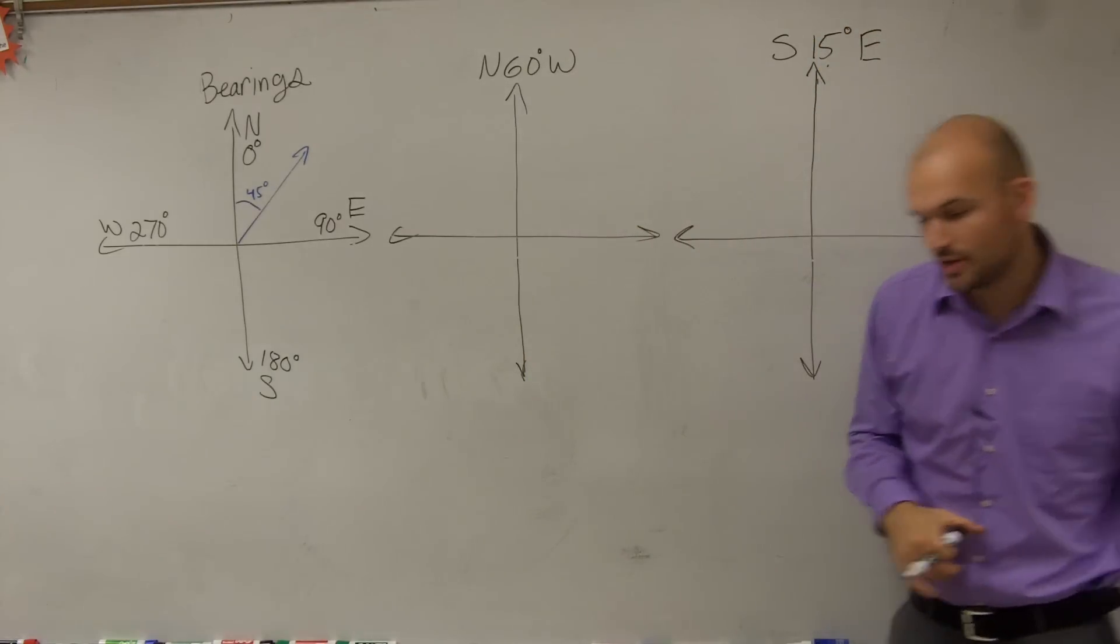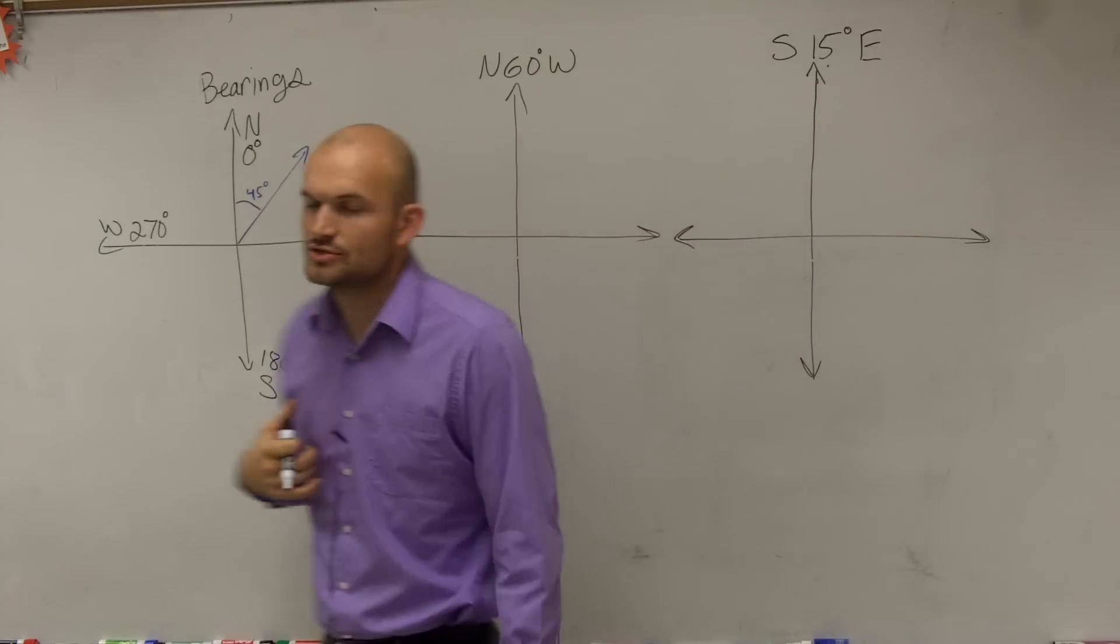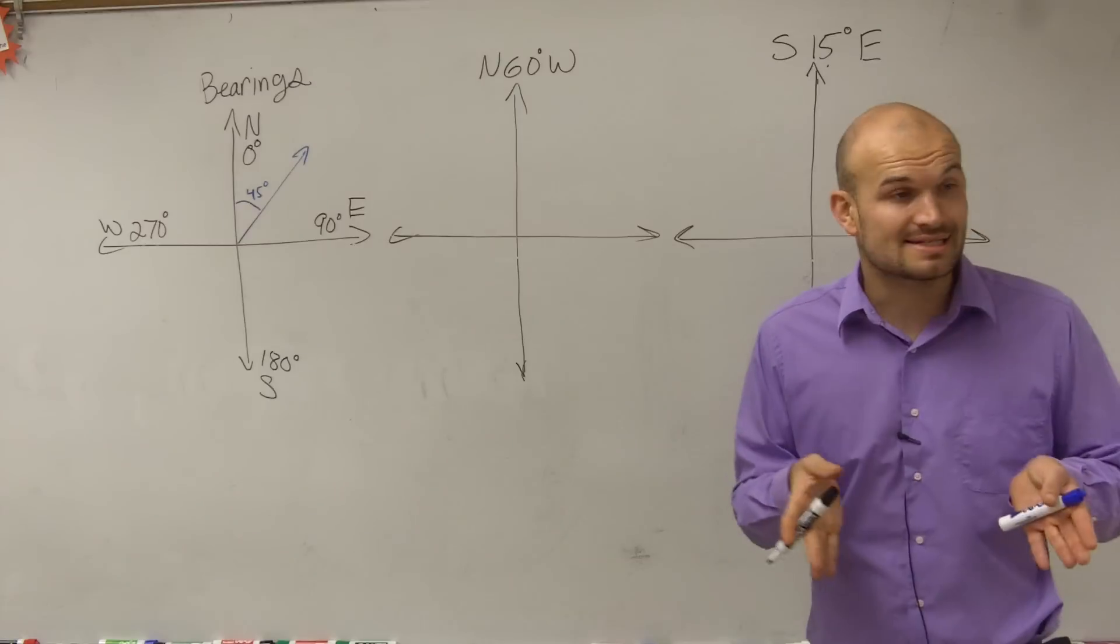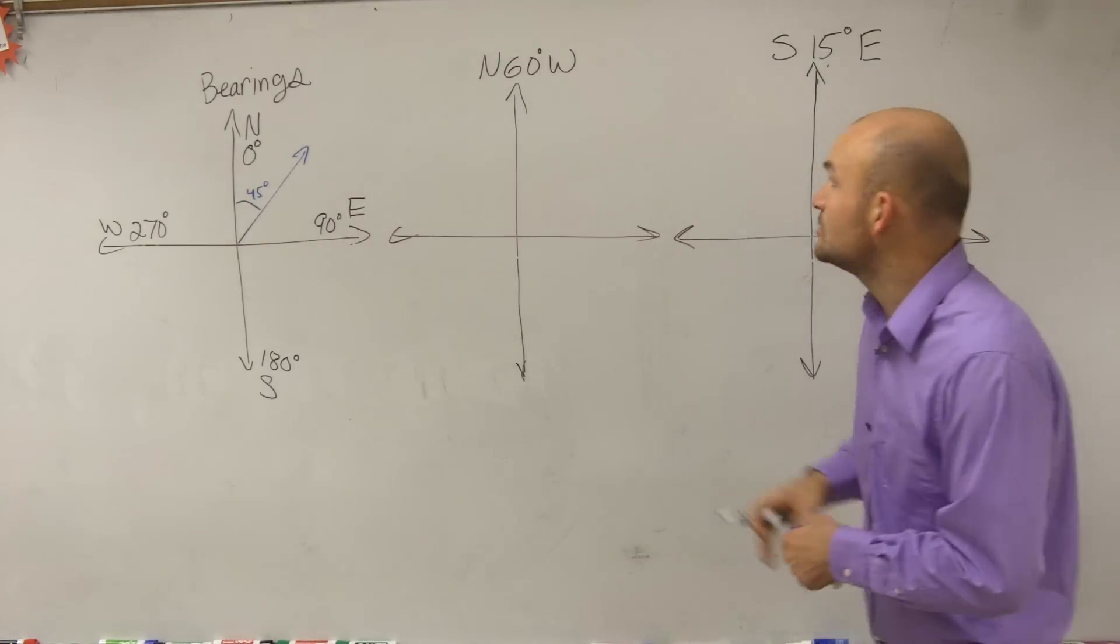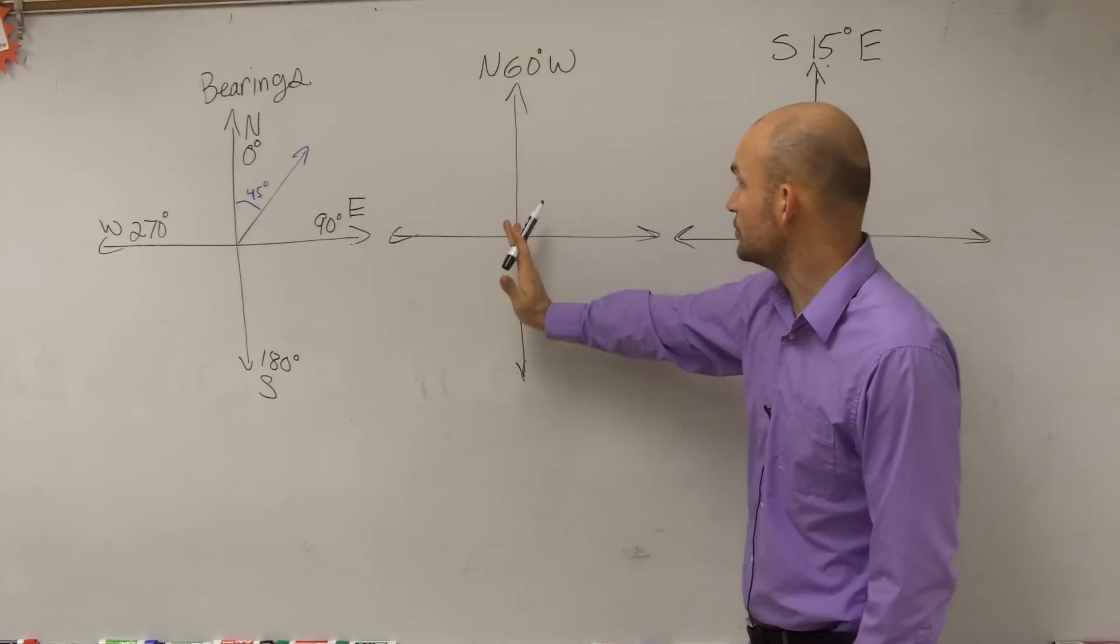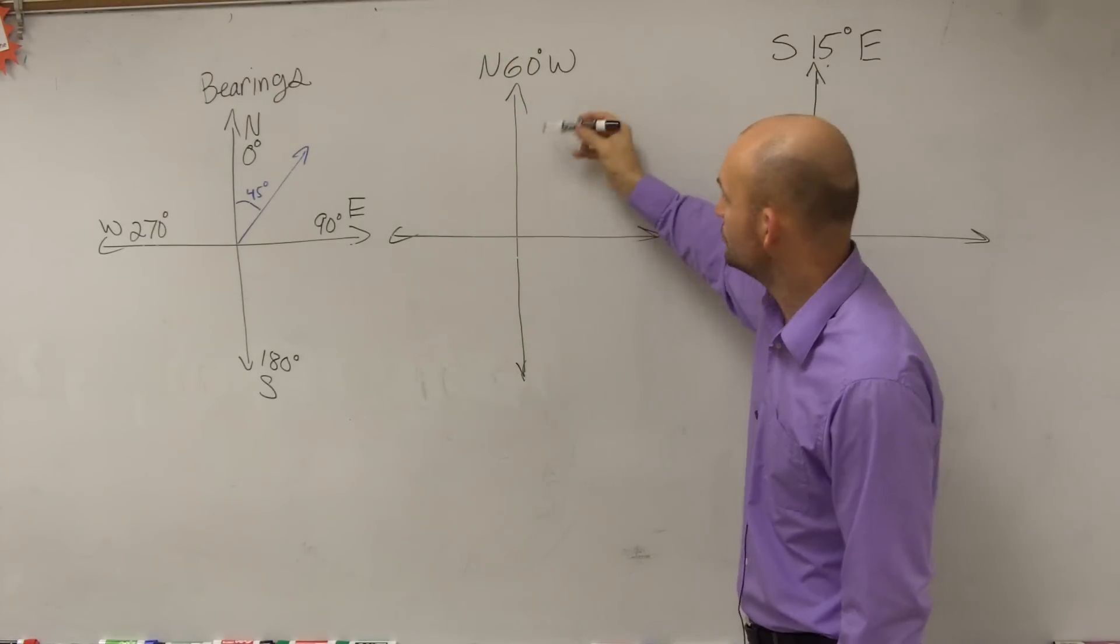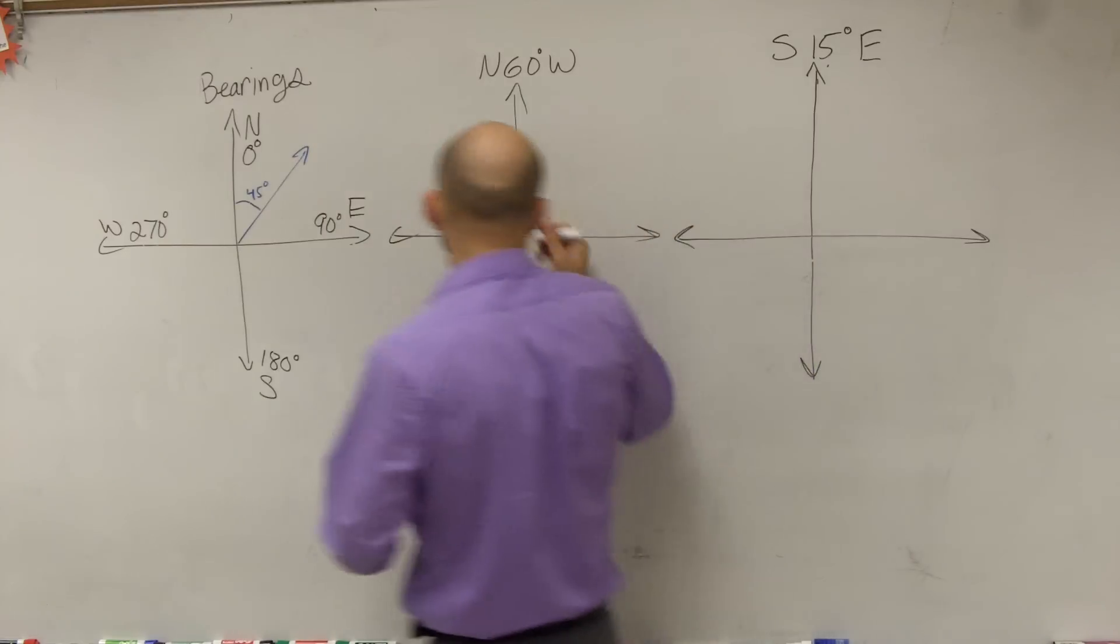So if I give you a direction in a bearing like this, what that tells you to do is rather than just give us the initial angle, we're going to use our axes to go off of our angle. So this one, it says north. So what you're going to do is you go on, get on the north axis, and then it says 60 degrees west. So you go to an angle of 60 degrees.